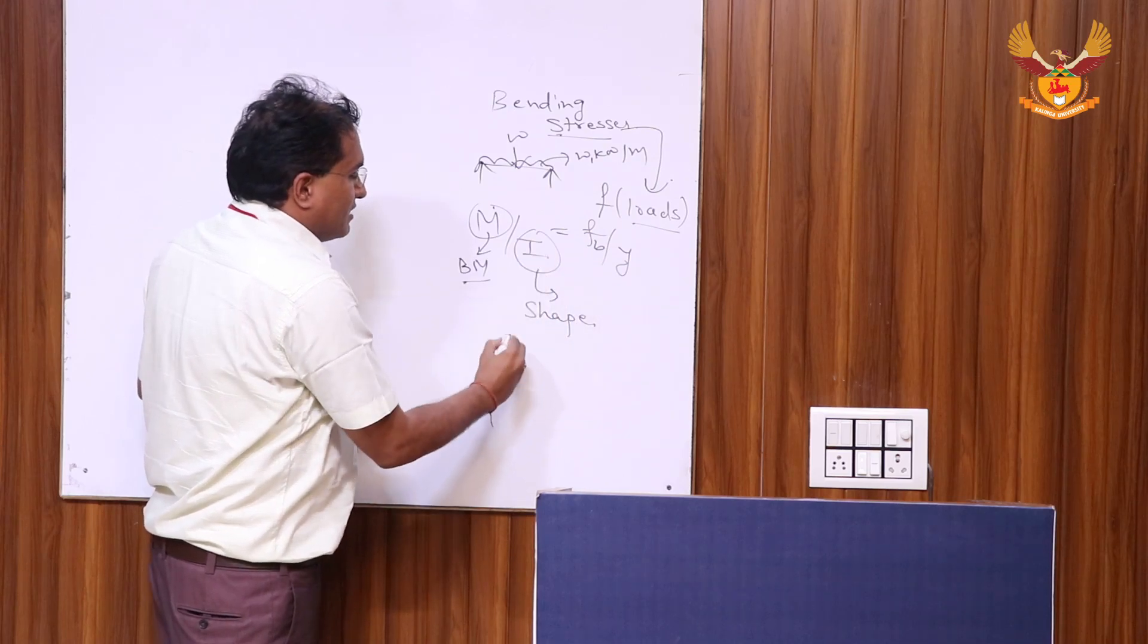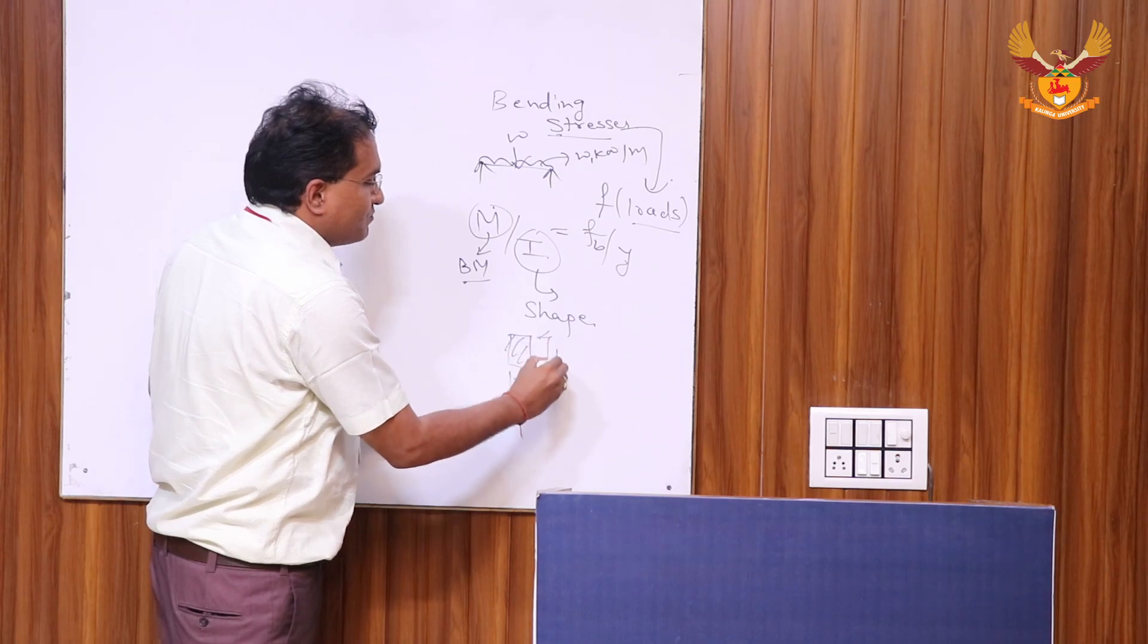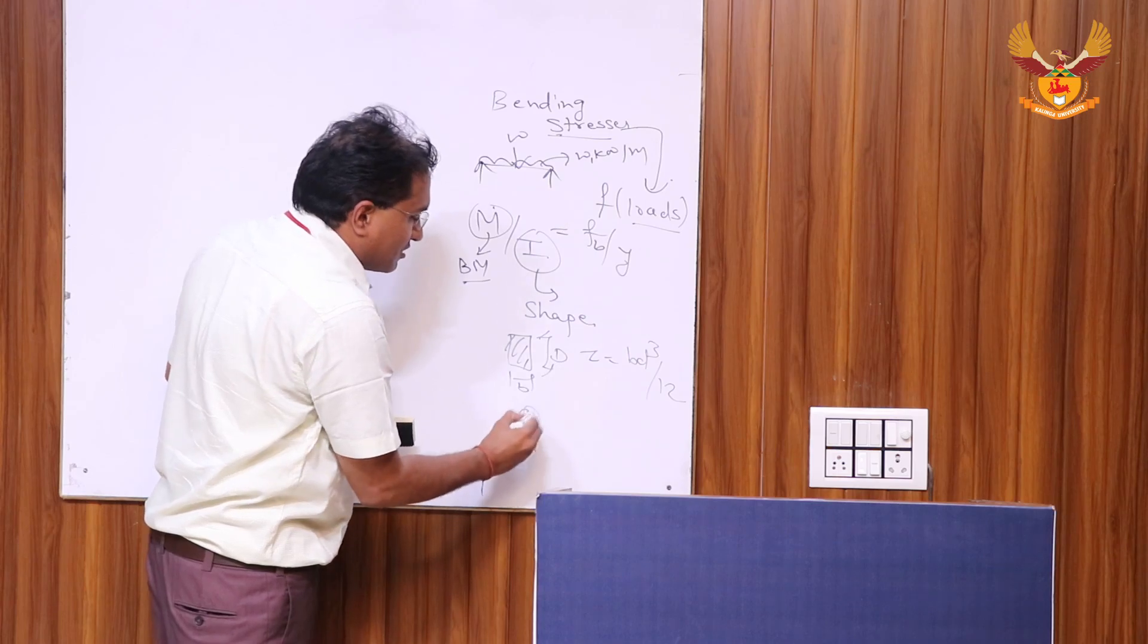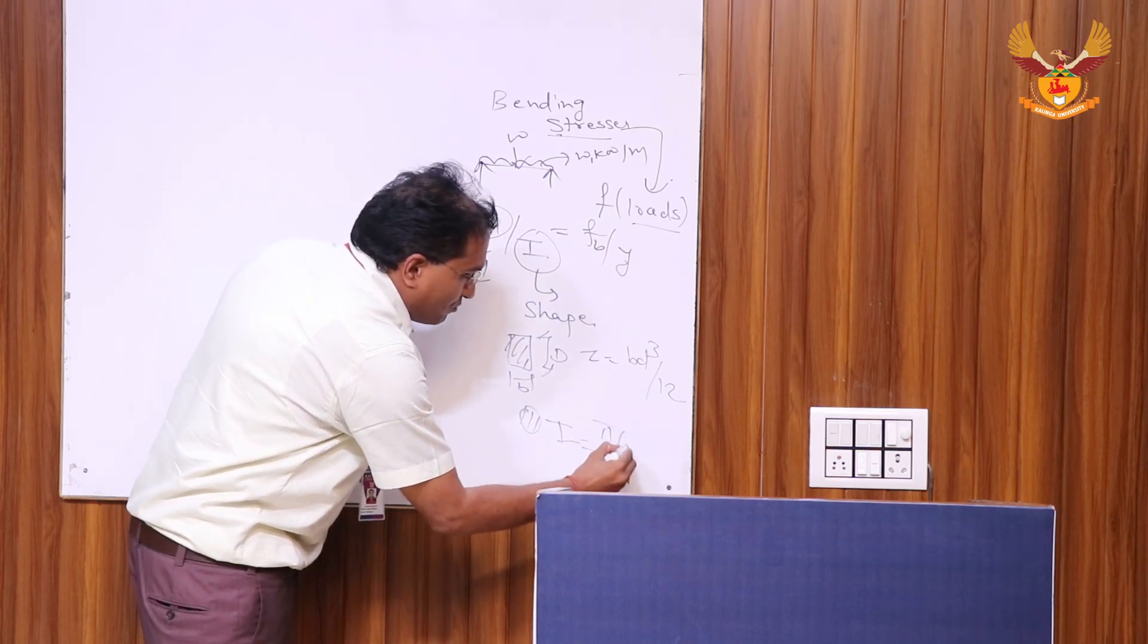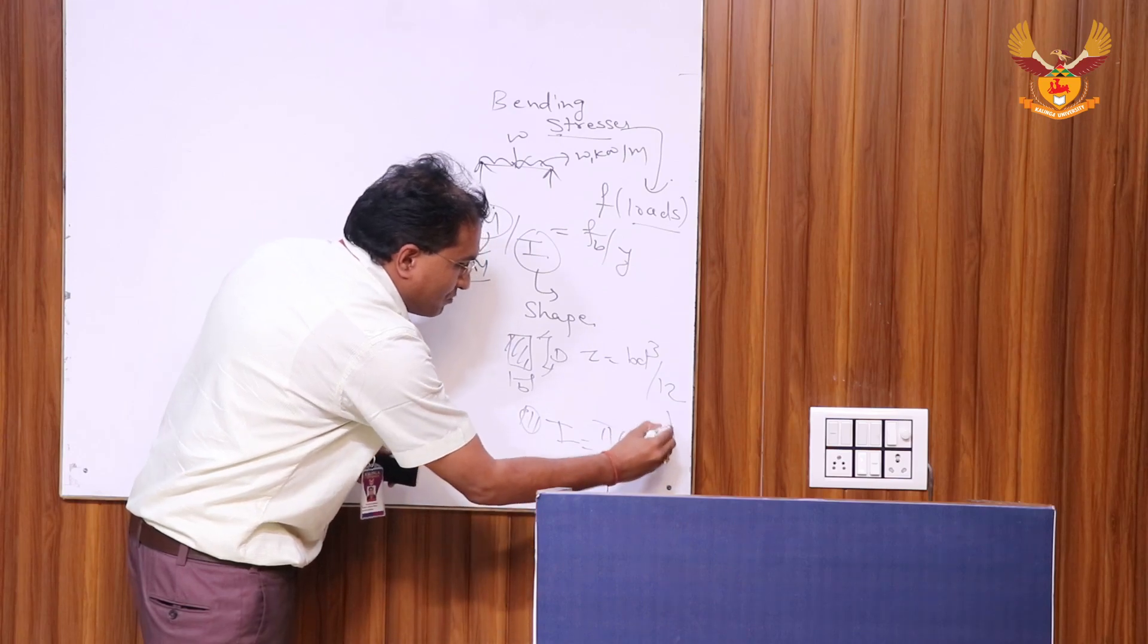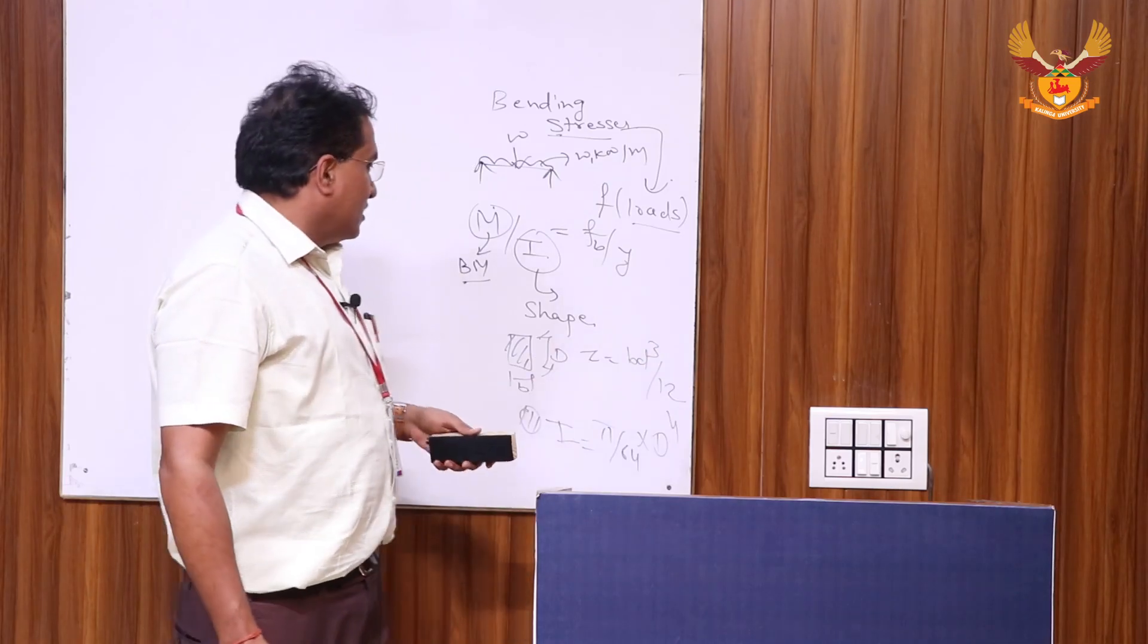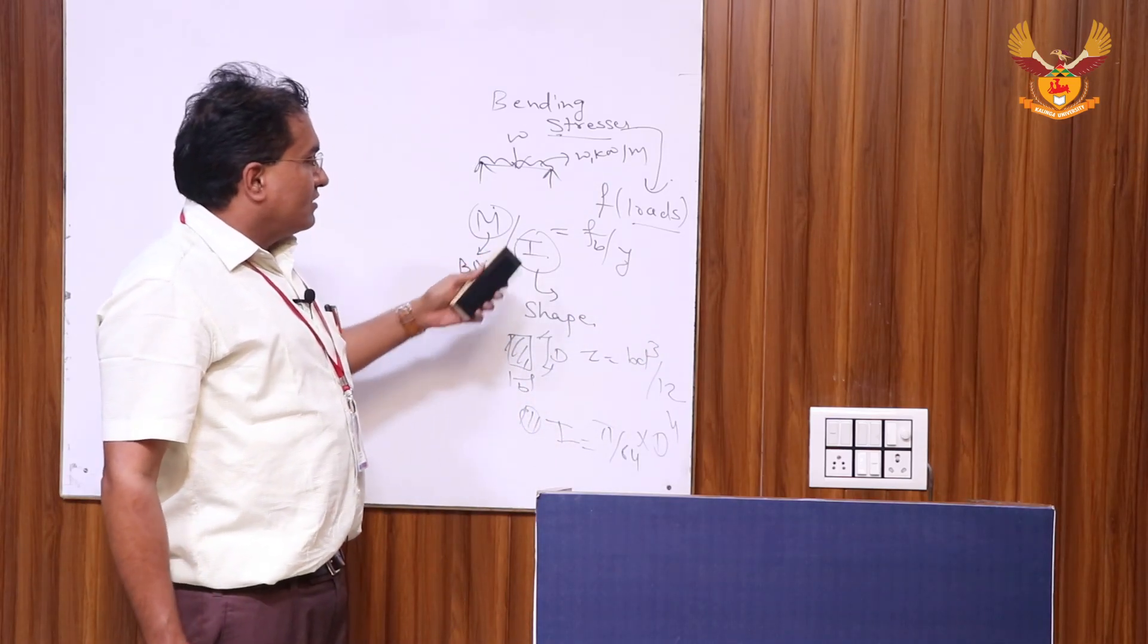This I value will be bd cube by 12. If it is circular section, then I value will be equal to pi by 64 into d to the power 4. If it is a hollow section and so on. So this moment of inertia I depends upon the shape of the beam.